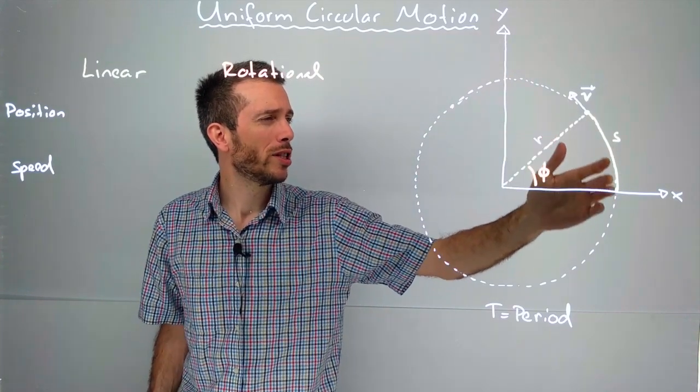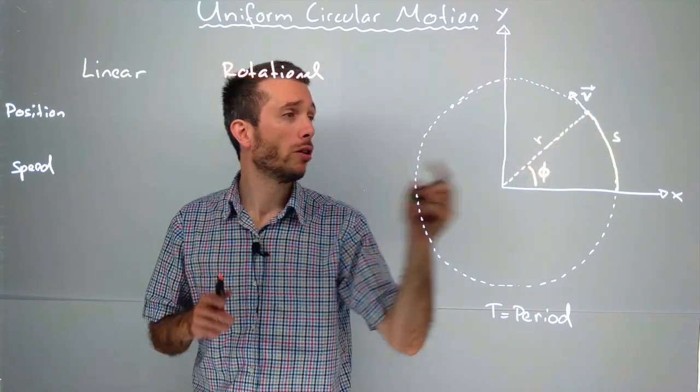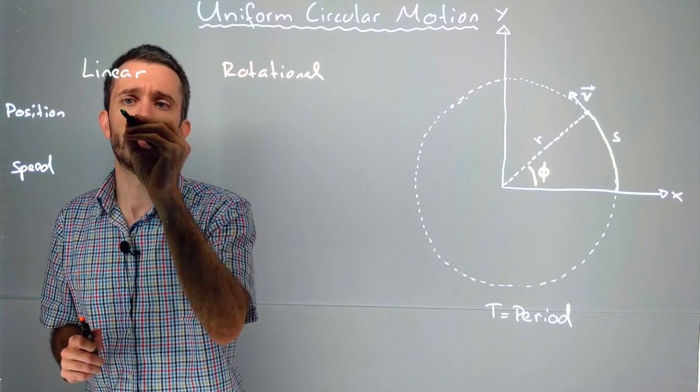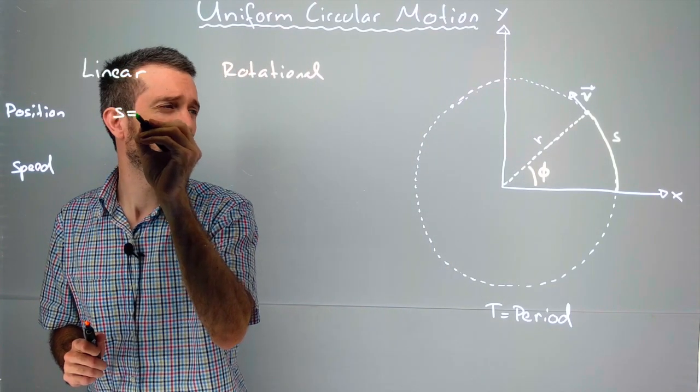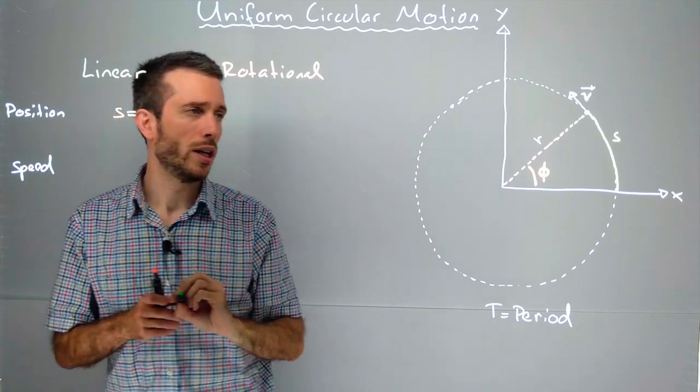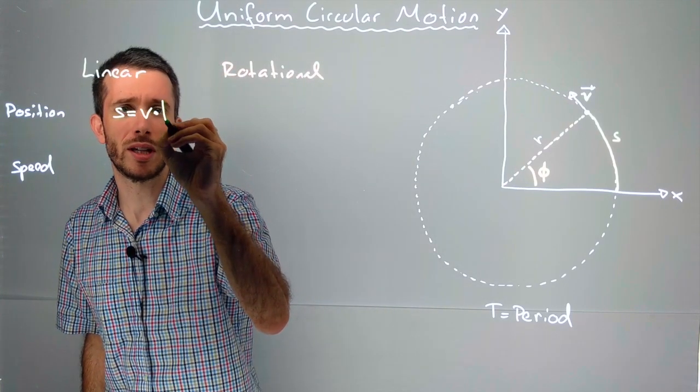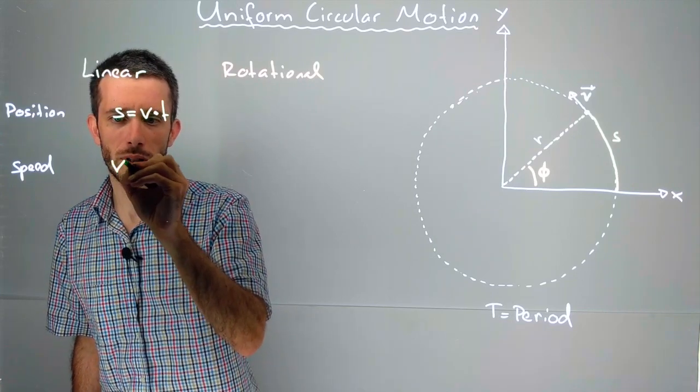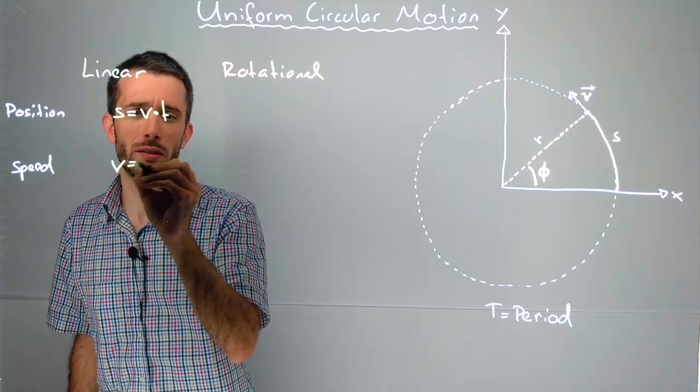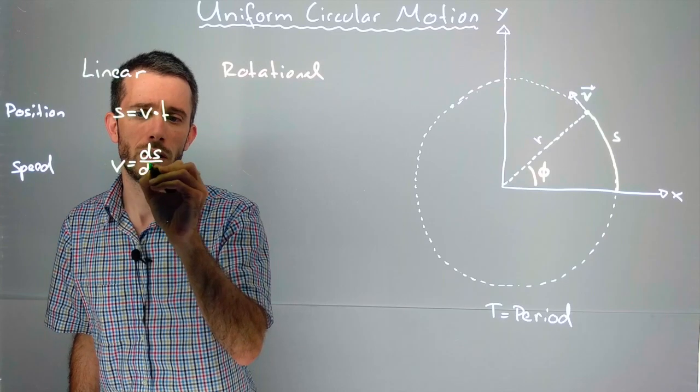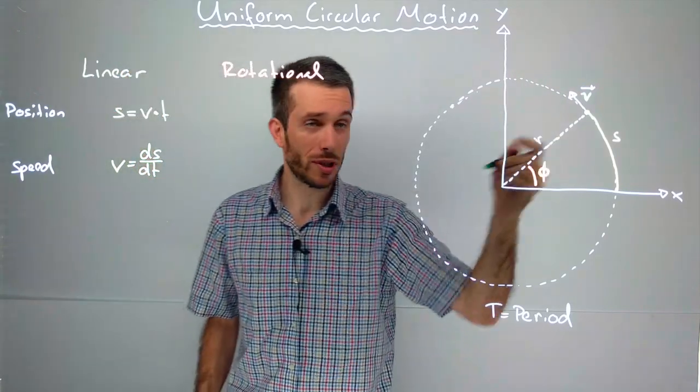For the linear variables, the position is given with the path along the curve, the path along the circle, s, which of course is its linear speed times the path. This brings us to the next line, the linear speed, being the derivation of that position.